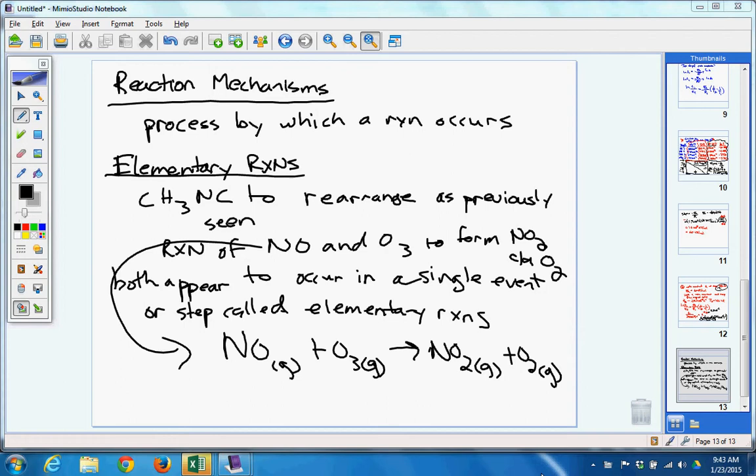Elementary reactions. The one we used before where we rearranged, we isomerized, methyl isonitrile. Remember that equation? We just kind of rearranged the N and the C. Another one would be this. Reaction of nitrogen monoxide and ozone to form nitrogen dioxide and O2. Both appear to occur in a single event or step called elementary reactions.